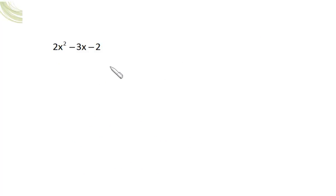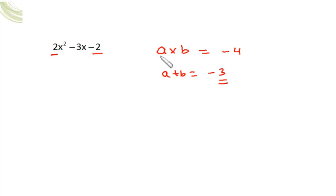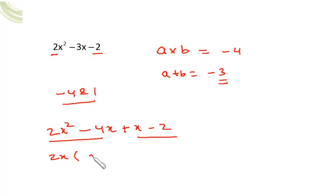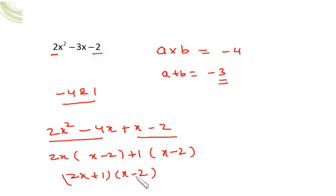For 2x²-3x-2: a×b must be 2×(-2)=-4 and a+b must be -3. Since product is negative, one number is positive and one negative; bigger number is negative. Choosing -4 and 1: (-4)×1=-4 and -4+1=-3. Rewrite as 2x²-4x+x-2, giving 2x(x-2)+1(x-2), which factors as (2x+1)(x-2).